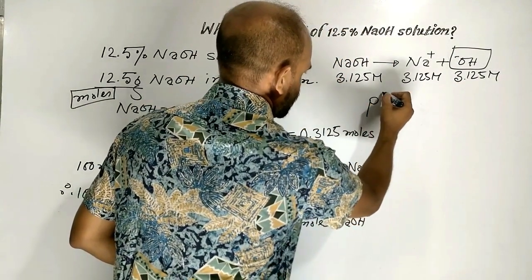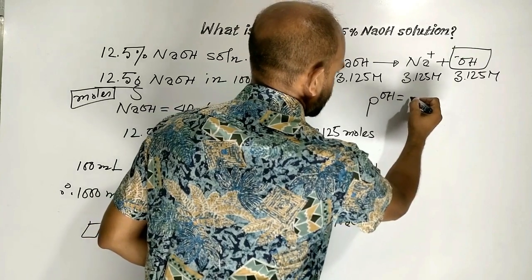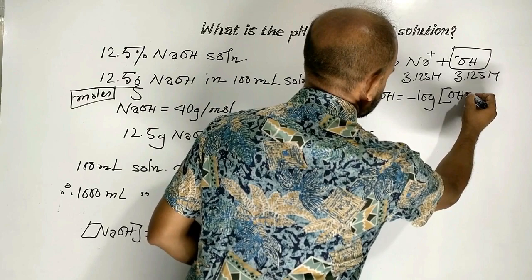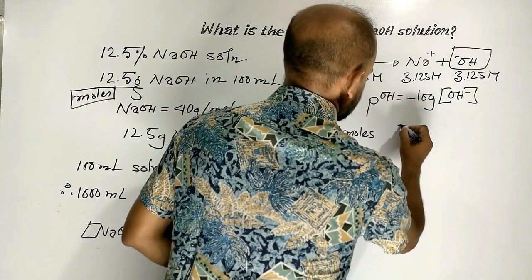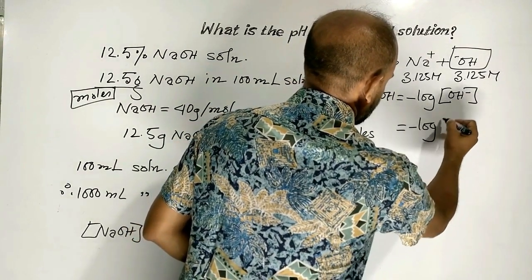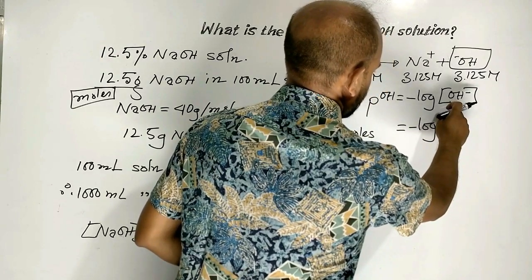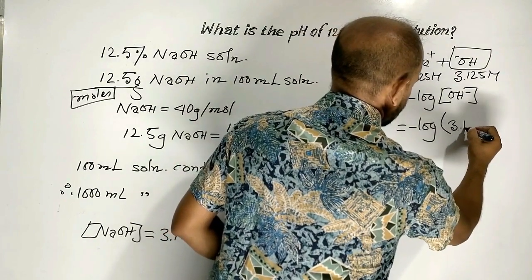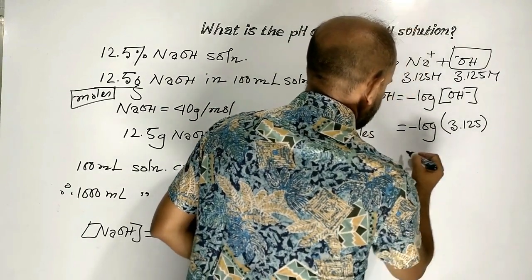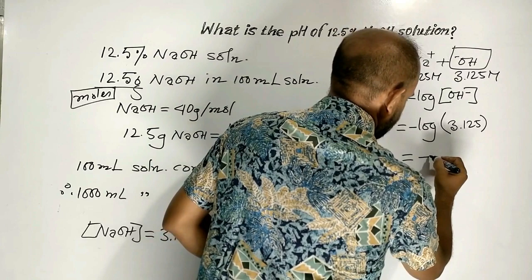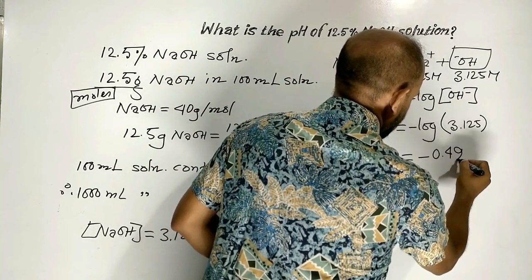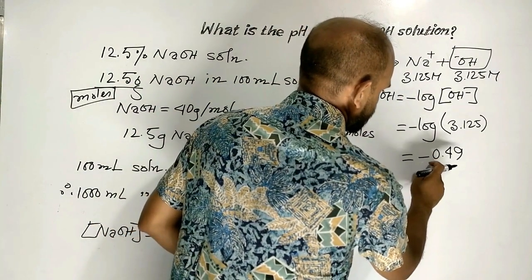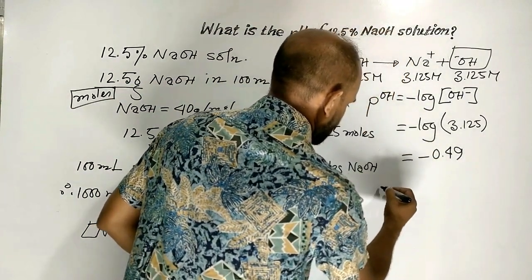pOH is equal to minus log of the hydroxide ion concentration. Here, the concentration of hydroxide ion is 3.125 molar. pOH equals minus log(3.125), which equals minus 0.49.